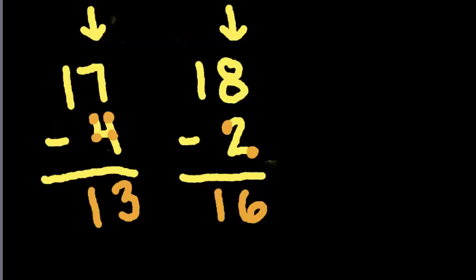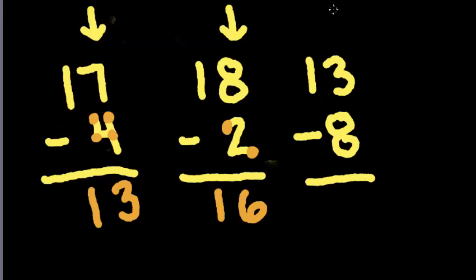But what happens when we have a number like 13 take away 8? In this case, you'll notice that we go to our ones place. The 3 is smaller than the 8. If I have 3 apples, I can't take 8 away.